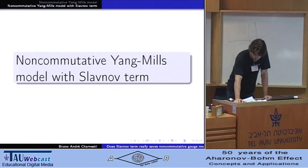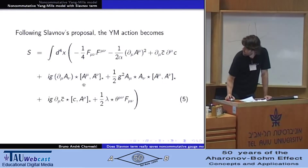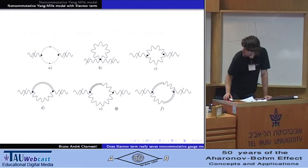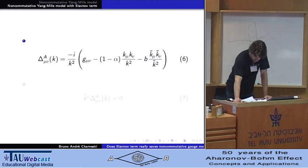Slavnov proposed to introduce a constraint in the action, which results in new contributions, these three contributions, and modifies the gauge field propagator, which becomes transverse to momentum-tilde.